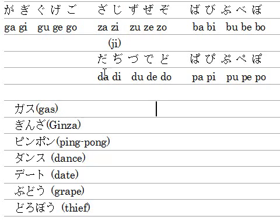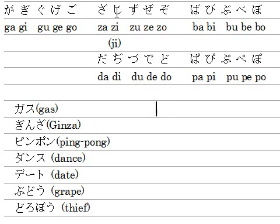Next row is the D-row (ゼロー). You remember タチツテト — it starts with T. But replace T with D: ダヂヅデド. Some of you may have noticed that ヂ and ヅ actually have the same pronunciation as ジ and ズ. When you type on the PC, you have to type D-I for ヂ and D-U for ヅ.